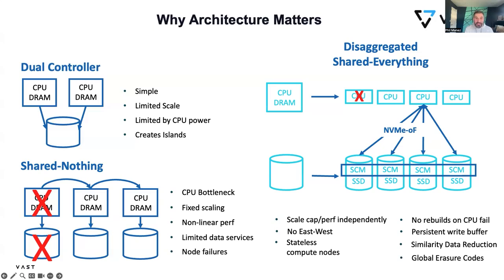Everything we try to do at Vast Data is about eliminating tradeoffs — no compromise around performance and efficiency, no compromise around simplicity and scale, no compromise around resilience, security, or feature functionality. It's a truly unique architecture. It's often been imitated, with people claiming they have NVMe-oF Fabric and are now disaggregated shared everything — but unless you truly built your architecture around these new technologies, you're not maximizing their full potential. This is just the architecture under the covers. I'd love to talk to you more about the full Vast Data platform and how we can help modernize your data center. Looking forward to talking to you all in the field — enjoy the journey of tapping into the full potential of your data with AI.